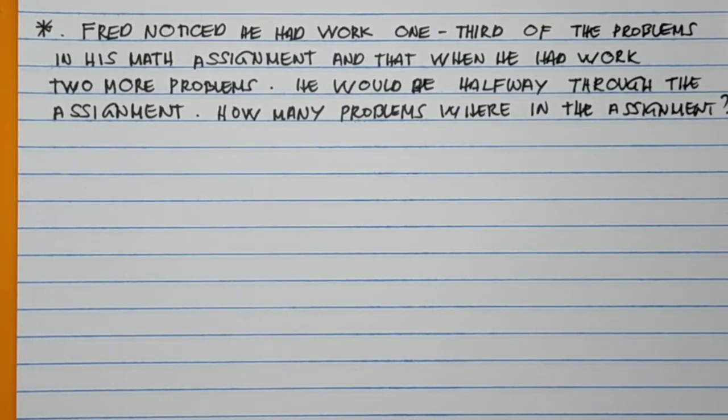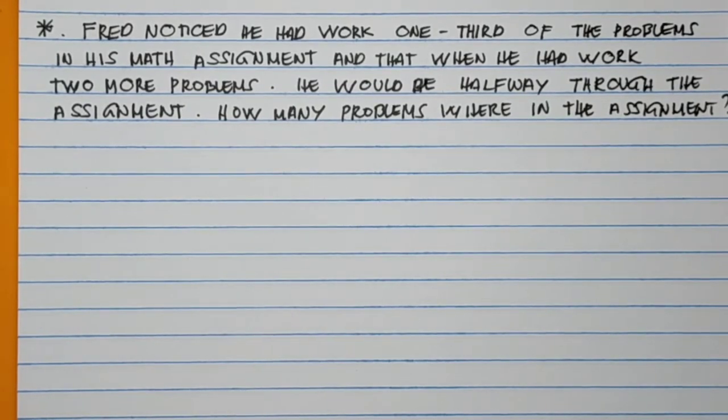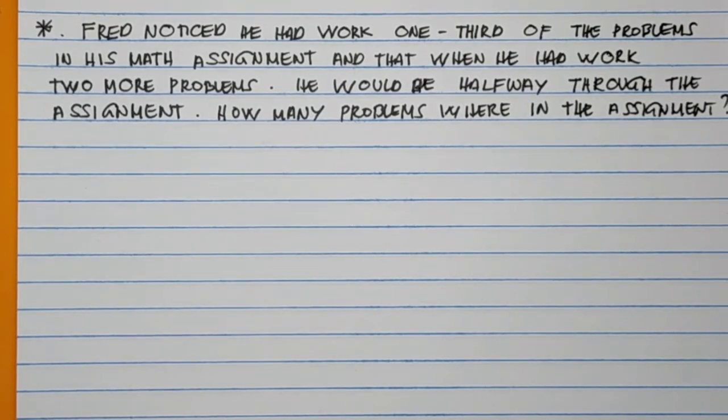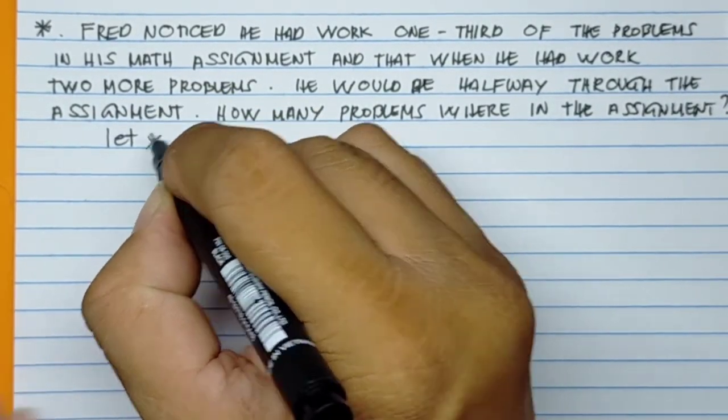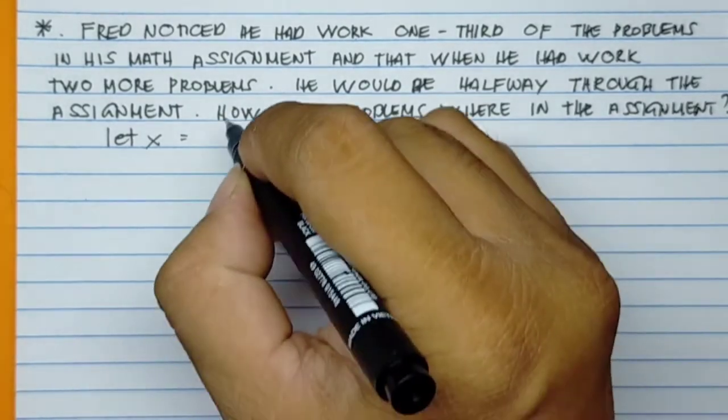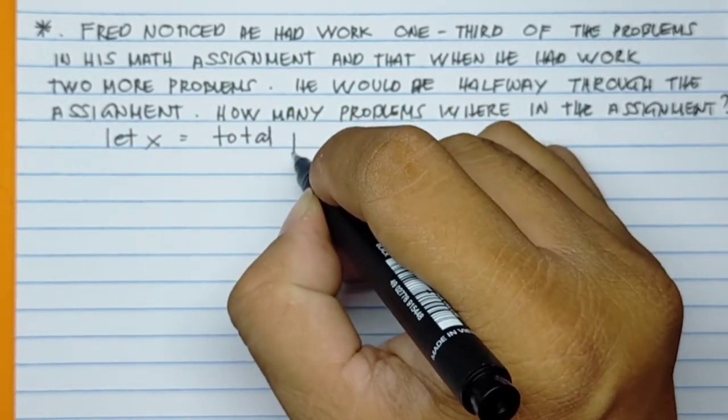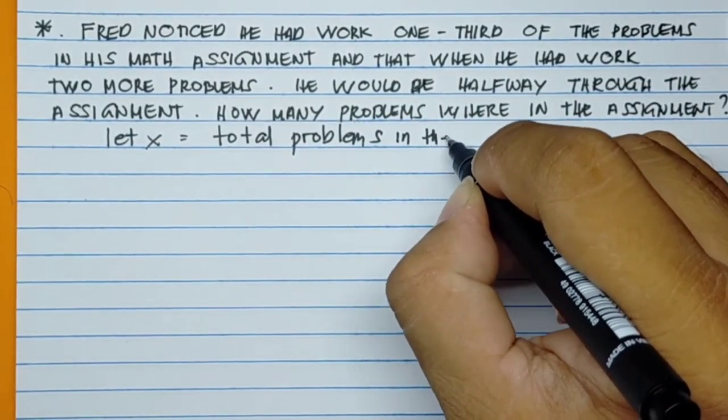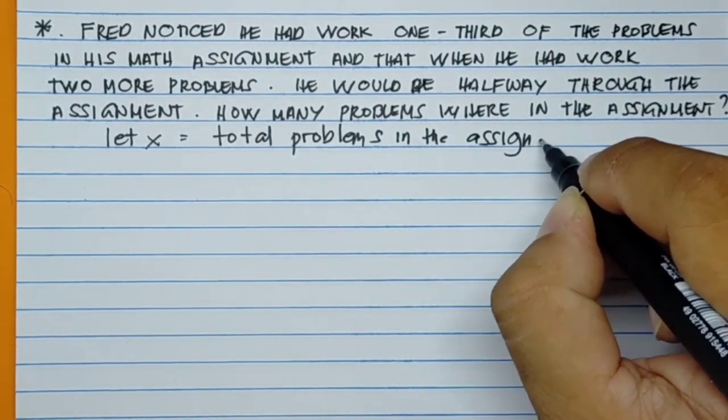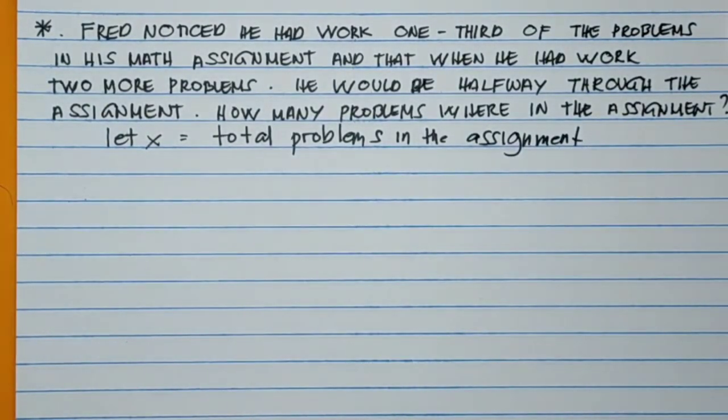Moving on. So Fred noticed he had worked one-third of the problems in his math assignment. And that when he had worked two more problems, he would be halfway through the assignment. So how many problems were in the assignment? So again, let X equal the total problems in the assignment.